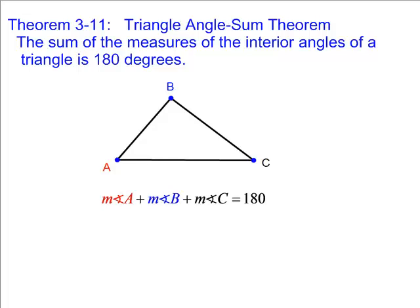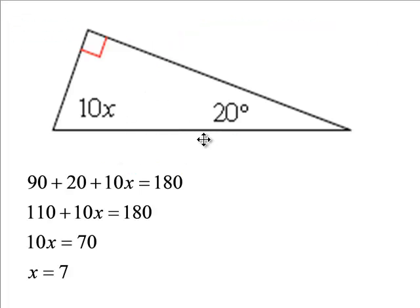Theorem 3-11 is the triangle angle sum theorem, and it simply says that all three of these interior angles are going to sum to 180 degrees. Okay? And let's apply that.